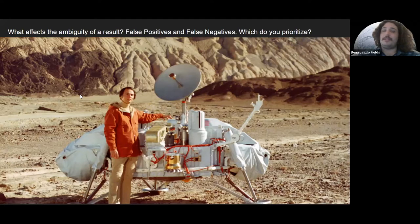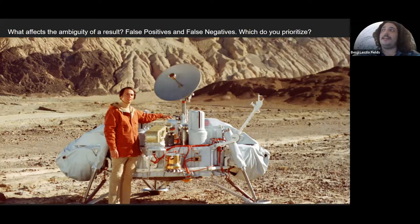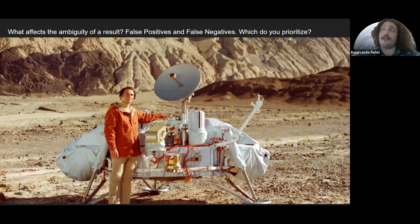The first thing we thought about was: what makes a result ambiguous in the first place? It comes down to two things — false positives and false negatives. You could have a situation where you thought you found life but it was actually some kind of geochemical sleight of hand tricking your instrument, or you could scoop up a soil sample on Mars, look for microbes, find none, but your instrument just wasn't sensitive enough and it was actually teeming with microbes. Most likely you'll end up with situations where you have potential for both: one experiment gets a positive result and a different experiment looking at a different chain of evidence gets a negative result.